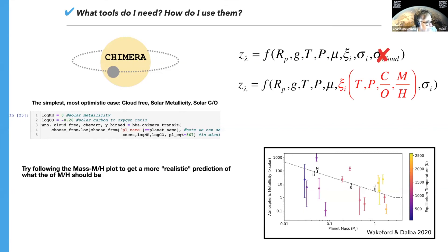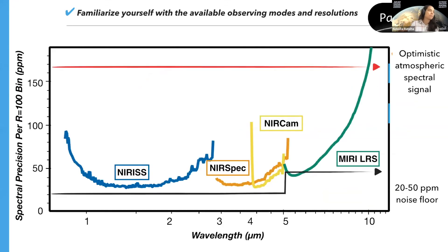Another popular question is: what's the most important instrumental limitation with attempting to detect atmospheres of terrestrial planets? The noise floor is going to be your first limitation. That 20 to 50 ppm noise floor is not based on any sort of instrument parameters that Webb is doing on the ground now — it's based on what we've seen with HST. Really honing in on how much we can push that ppm noise floor by stacking a bunch of transits is going to be the biggest limitation in doing Earth-like planets. Even the brightest targets could theoretically surpass this 20 to 50 ppm noise floor.